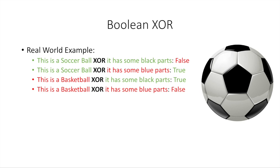Here's an example. If we were to say this is a soccer ball XOR it has some black parts — both are true, so that would be false. This is a soccer ball XOR it has some blue parts — this is true because only one of those two conditions is true. This is a basketball XOR it has some black parts — that's true. This is a basketball XOR it has some blue parts — that's false, because both are false. So both true or both false gives false under XOR. One true, one false gives true under XOR. That's pretty easy to remember.